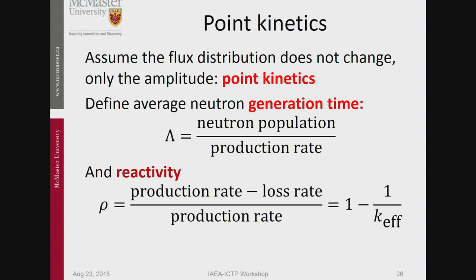The generation time Λ (lambda) is the neutron population divided by the production rate — it has the dimension of seconds. It basically means how long it takes to reproduce all the neutrons that you had. If that's short, your reactor responds fast. The other important concept is reactivity ρ (rho) — a word that only exists in nuclear reactors. Reactivity is the production rate minus the loss rate divided by the production rate, which by definition equals 1 minus 1 over k-effective.